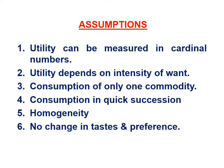The third assumption is consumption of only one commodity and not more than one commodity. The fourth assumption is consumption in quick succession — meaning there is no time gap between the consumption of two units of a commodity. The fifth assumption is homogeneity — the units of the commodity consumed should be homogeneous in shape, size, color, and taste.